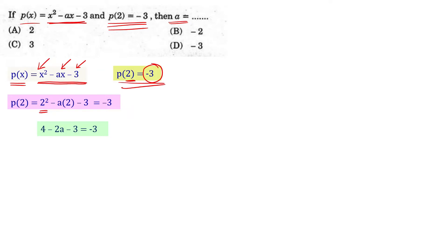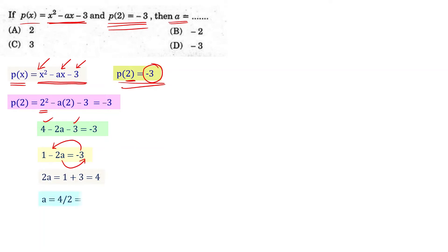Simplifying: 4 minus 3 gives 1, so 1 minus 2a equals minus 3. Moving terms across: 2a equals 1 plus 3, which equals 4. Therefore a equals 4 divided by 2, that is equal to 2. So the answer is a equals 2, which corresponds to answer choice a.